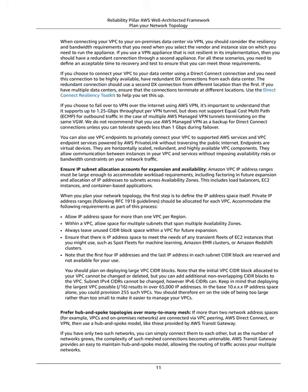Use the Direct Connect Resiliency Toolkit to help set this up. If you choose to fail over to VPN over the internet using AWS VPN, it supports up to 1.25 Gbps throughput per VPN tunnel but does not support equal cost multi-path (ECMP) for outbound traffic in the case of multiple AWS managed VPN tunnels terminating on the same VGW. We do not recommend using AWS managed VPN as a backup for Direct Connect connections unless you can tolerate speeds less than 1 Gbps during failover. You can also use VPC endpoints to privately connect your VPC to supported AWS services powered by AWS PrivateLink without traversing the public internet.